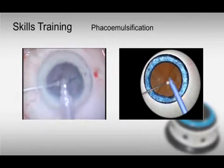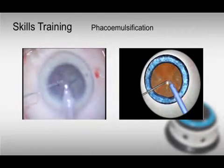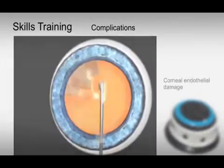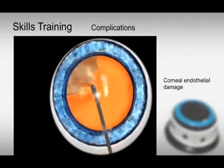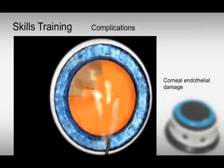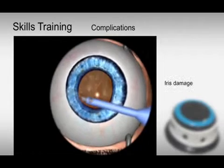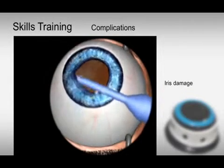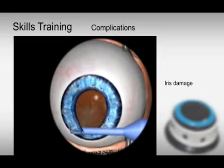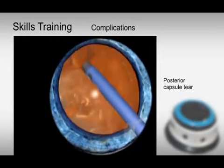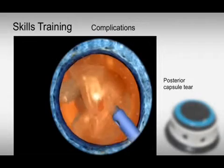The user can also be confronted with complications according to their performance. This is an example of corneal endothelial damage with consecutive edema. Here we can see manipulation of the iris with the phaco tip, and posterior capsule rupture during phacoemulsification.